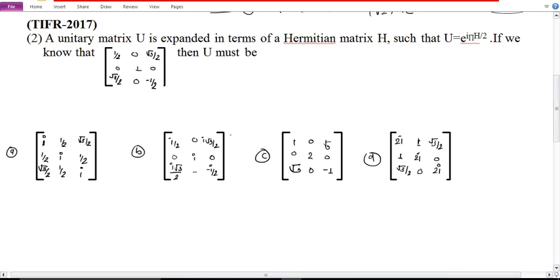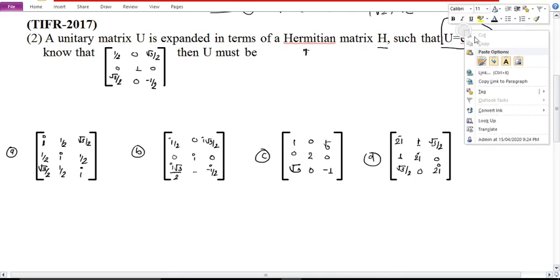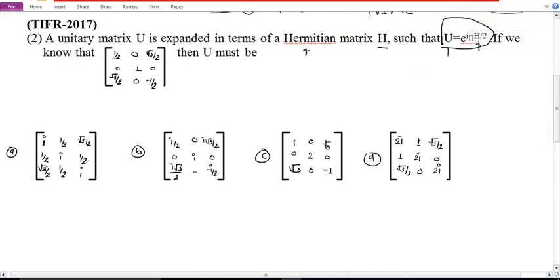Now see the second question. A unitary matrix U is expanded in terms of Hermitian matrix H such that U equals e to the power i H by 2, where H is the Hermitian matrix and U is the unitary matrix. If we know that H equals this matrix, then U must be. So see, the unitary matrix is represented in terms of Hermitian. We are given U is a unitary matrix, so it must satisfy the unitary matrix conditions.